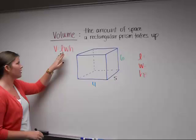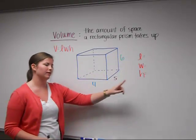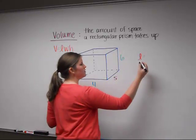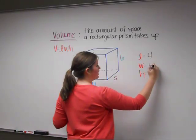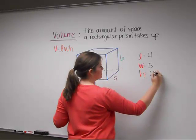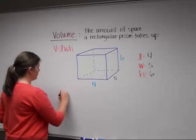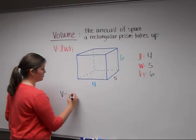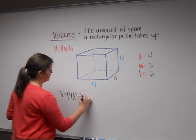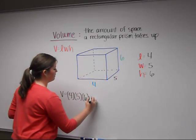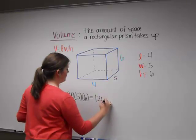So now that we have our volume equation, we're going to do an example. First we want to fill in our variables: our length is 4, our width is 5, and our height is 6. Now we can plug our variables into our equation. So V equals 4 times 5 times 6, which gives us 120 cubic inches.